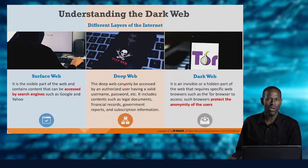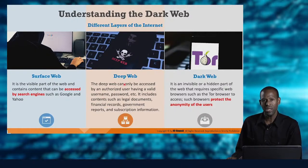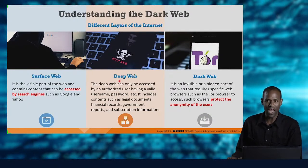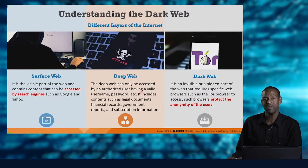Then there's the deep web, which is on the internet but locked away. For instance, if you have a Box or Dropbox account or some other cloud-associated account, you can have terabytes — in fact, petabytes — stored in these types of accounts, but they are behind a wall. You can't get to the deep web by searching the surface web. Legal documents, financial records, government records, and prescription information are locked away under layers of AAA — authentication, authorization, and accounting — and encryption.